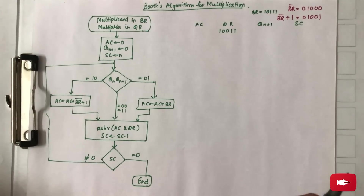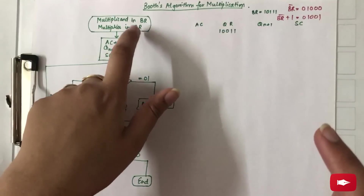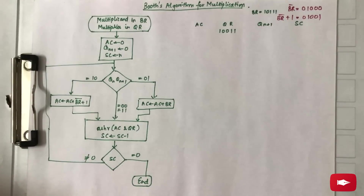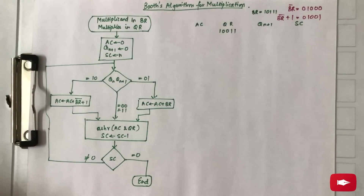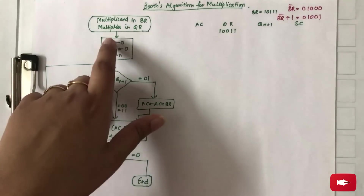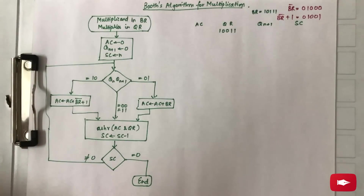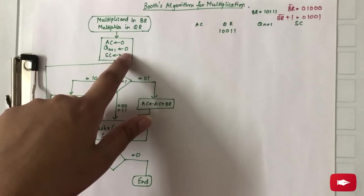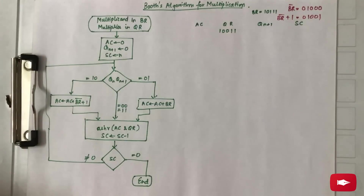Now let's begin with the flowchart for Booth's algorithm. If you have already gone through the previous video, the two numbers to be multiplied were B and Q, but here the numbers are represented by B_R and Q_R, because B and Q are also having their sign bits along. Therefore, to give a different representation we use B_R and Q_R, which represent that both numbers have their sign bits with them. A_C is used here instead of A as in the previous video, which is initially 0. Q_N+1 is also a bit which is initially 0, and the sequence counter is equal to the number of bits in the multiplier or multiplicand.